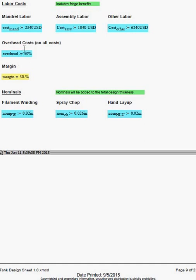The overhead cost can be input as 30%, so the margin is 30%, and the nominals on the filament winding, and for spray chop, and for hand layup, can be input on this sheet.